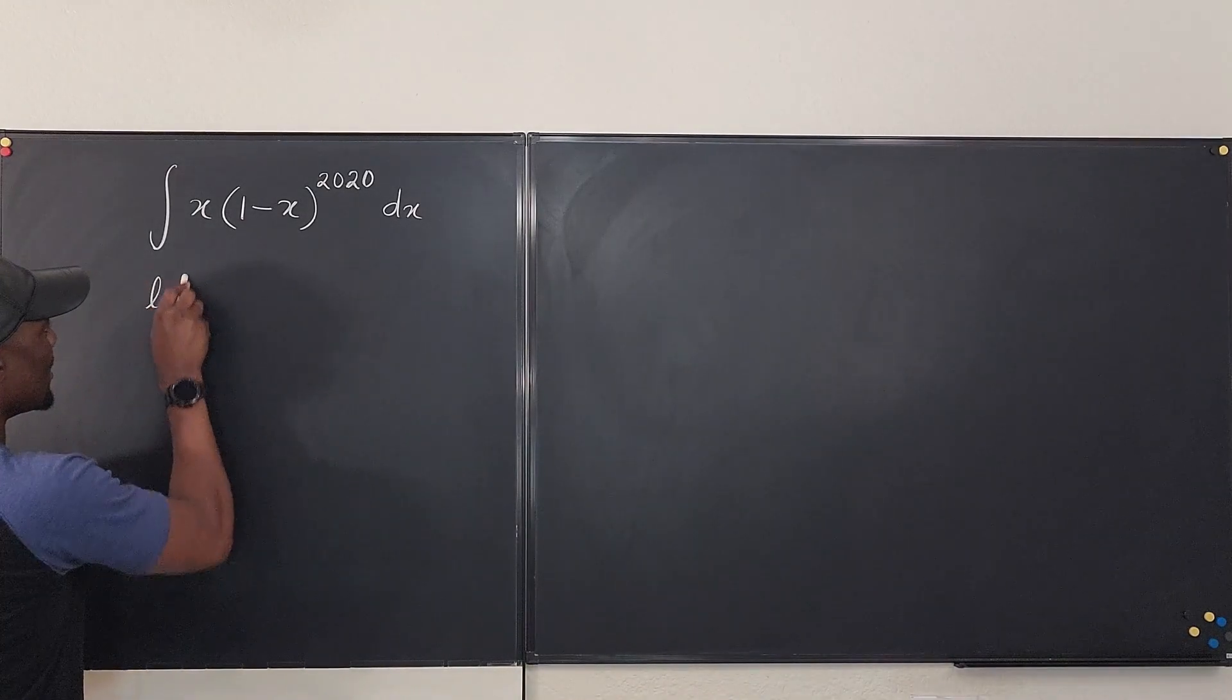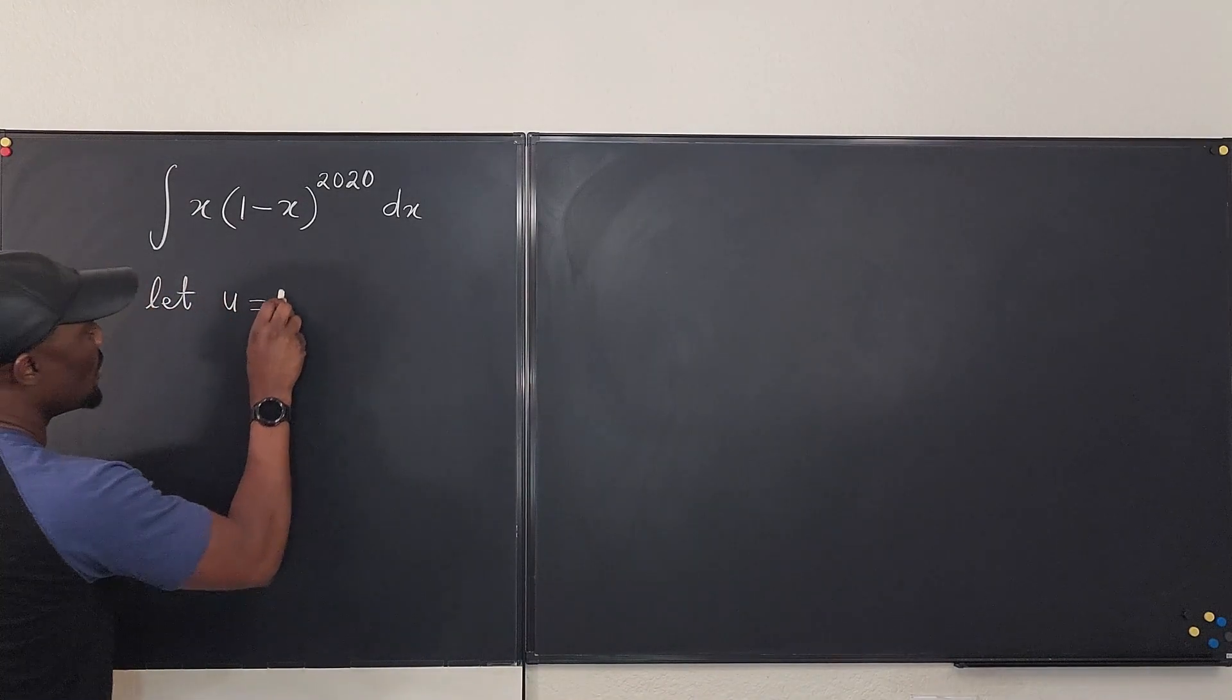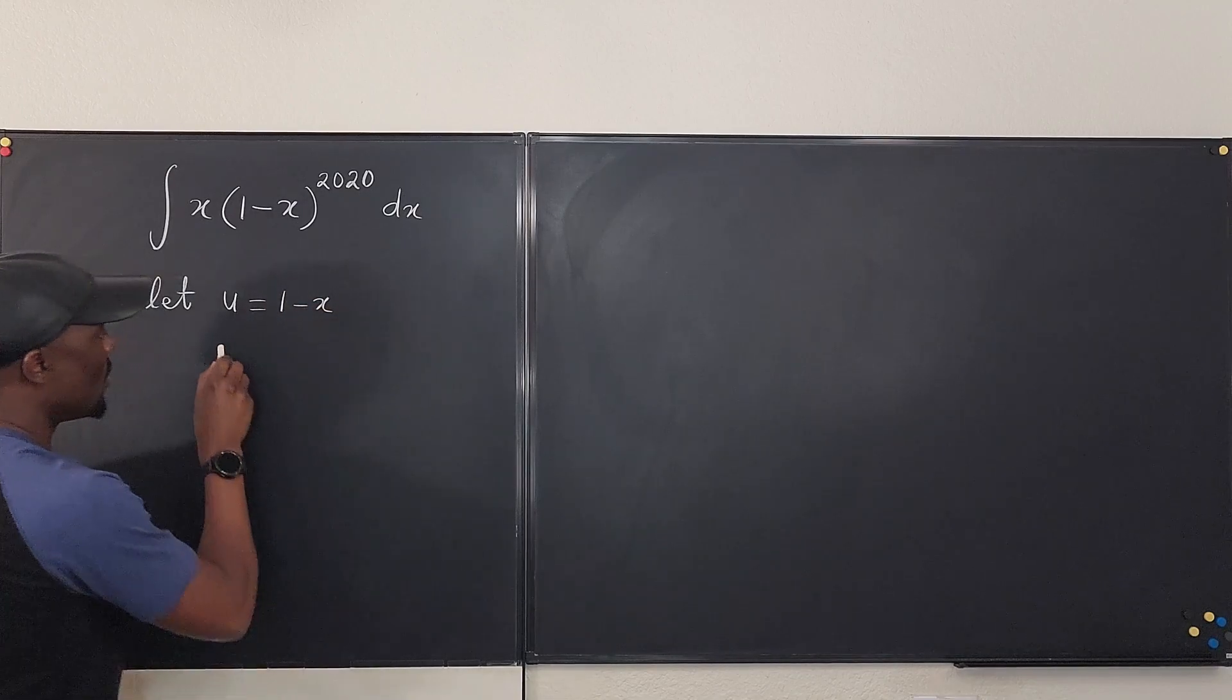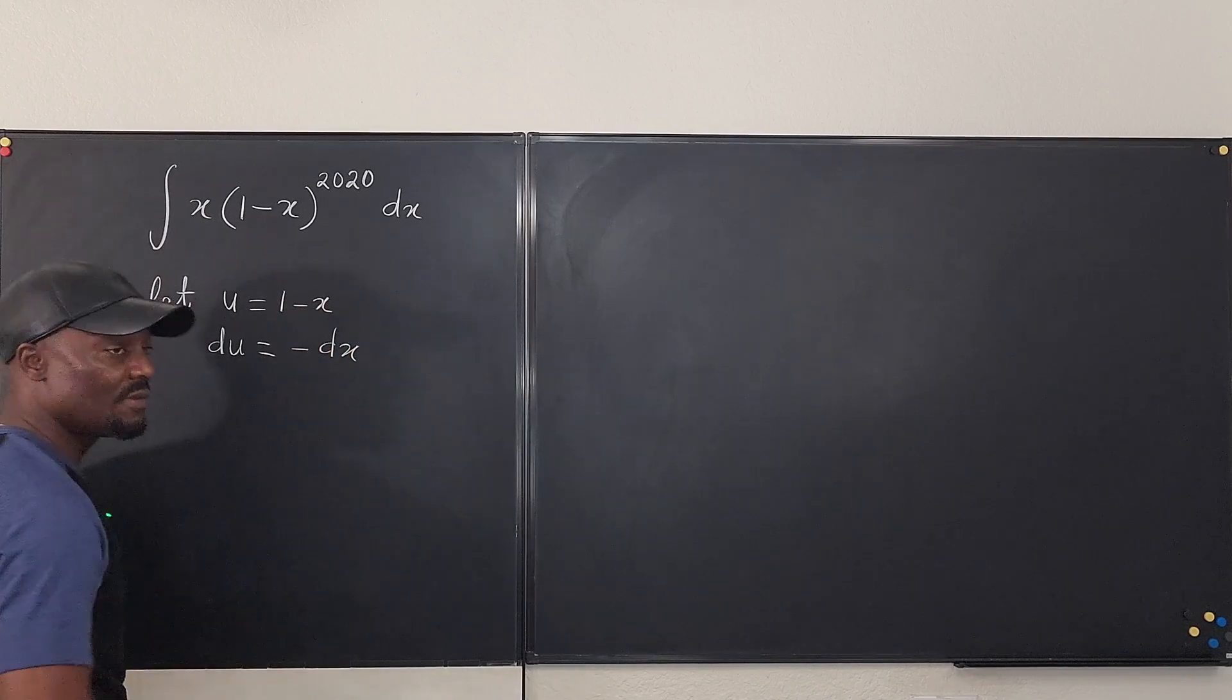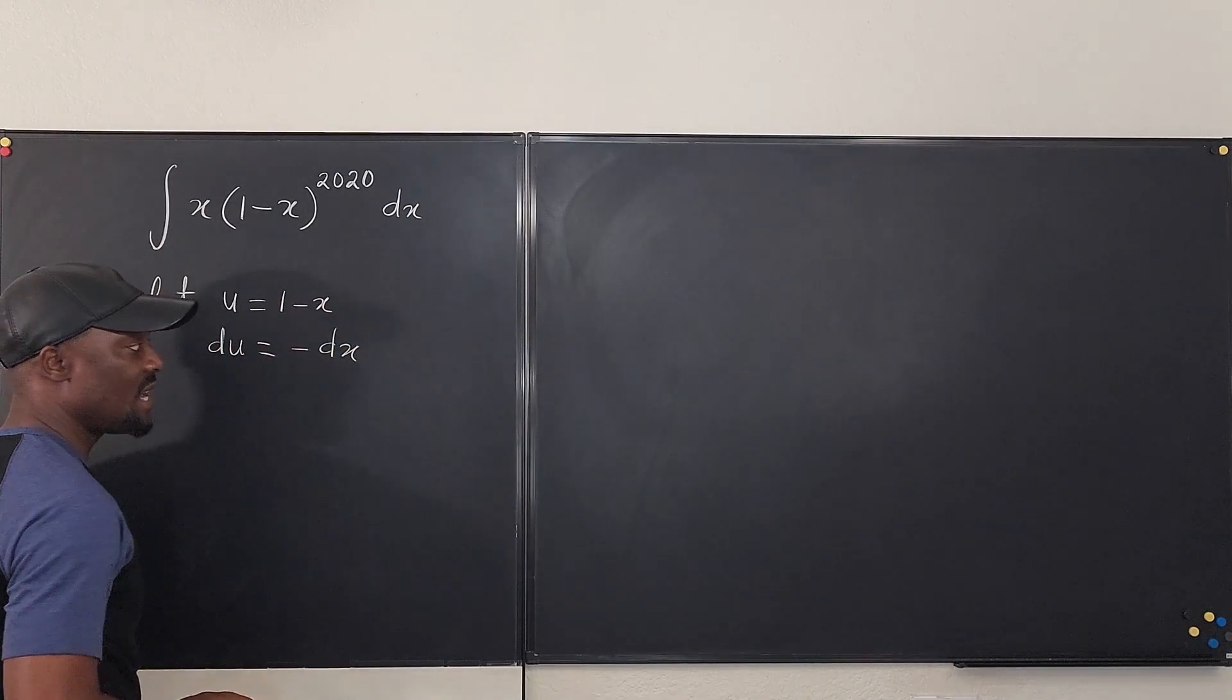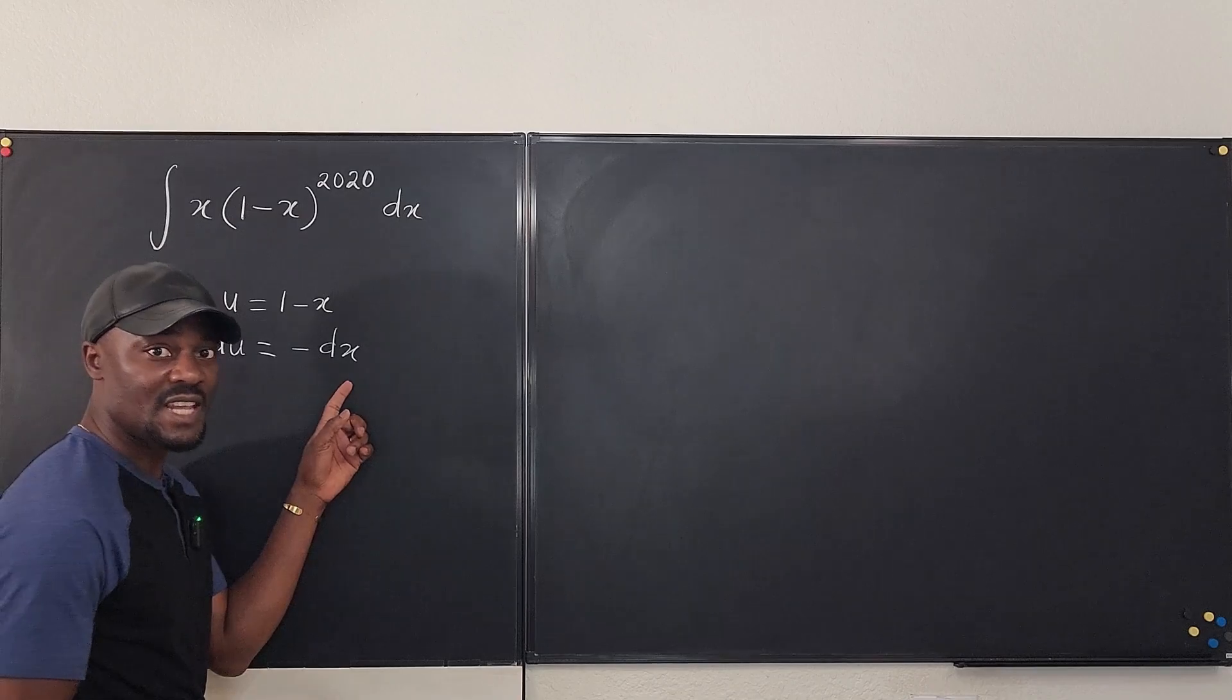So we're gonna say let u equal 1 minus x. We quickly find du - it's gonna be negative dx because the derivative is negative 1. But we don't want negative by the dx, we want to move it over here, so negative du will be replacing dx.